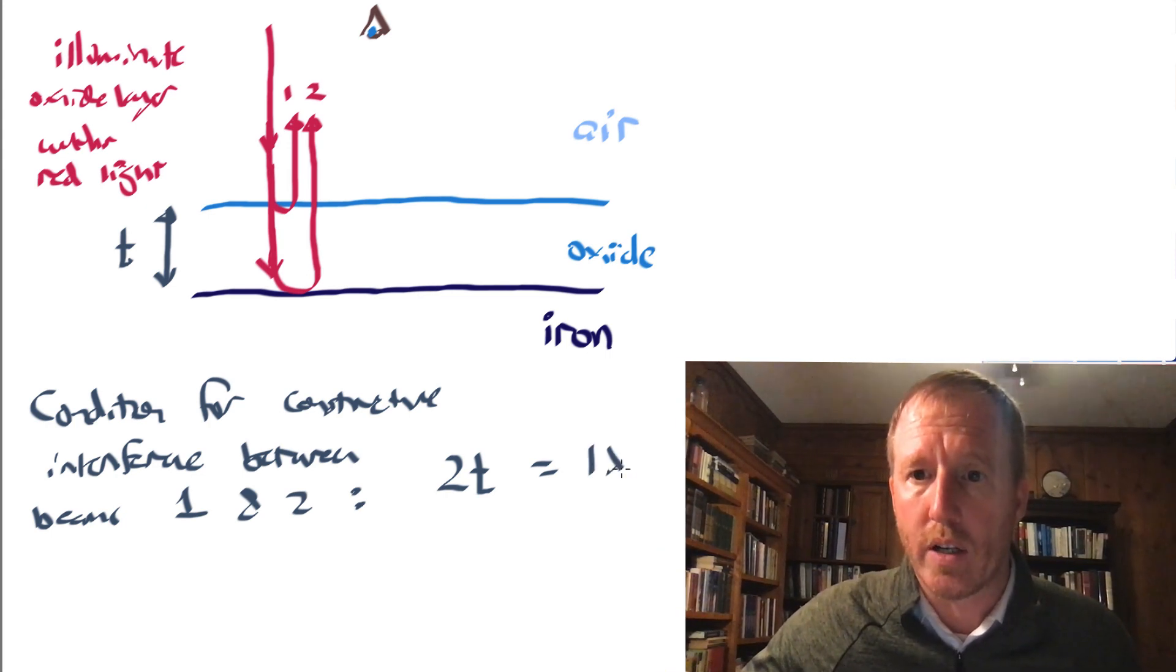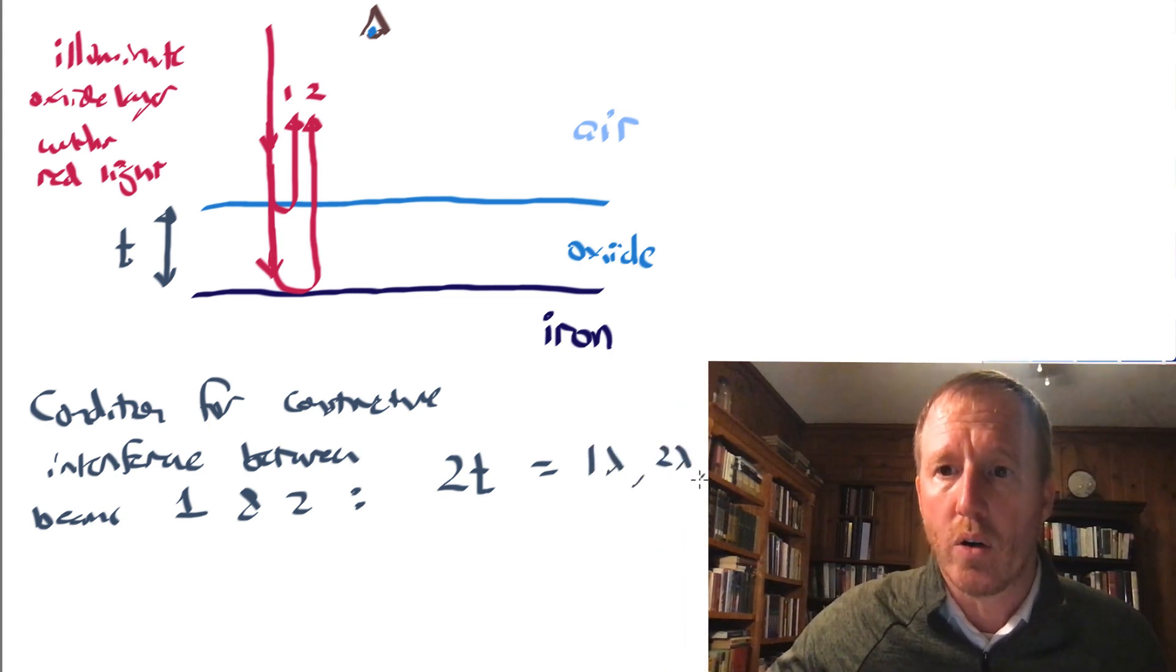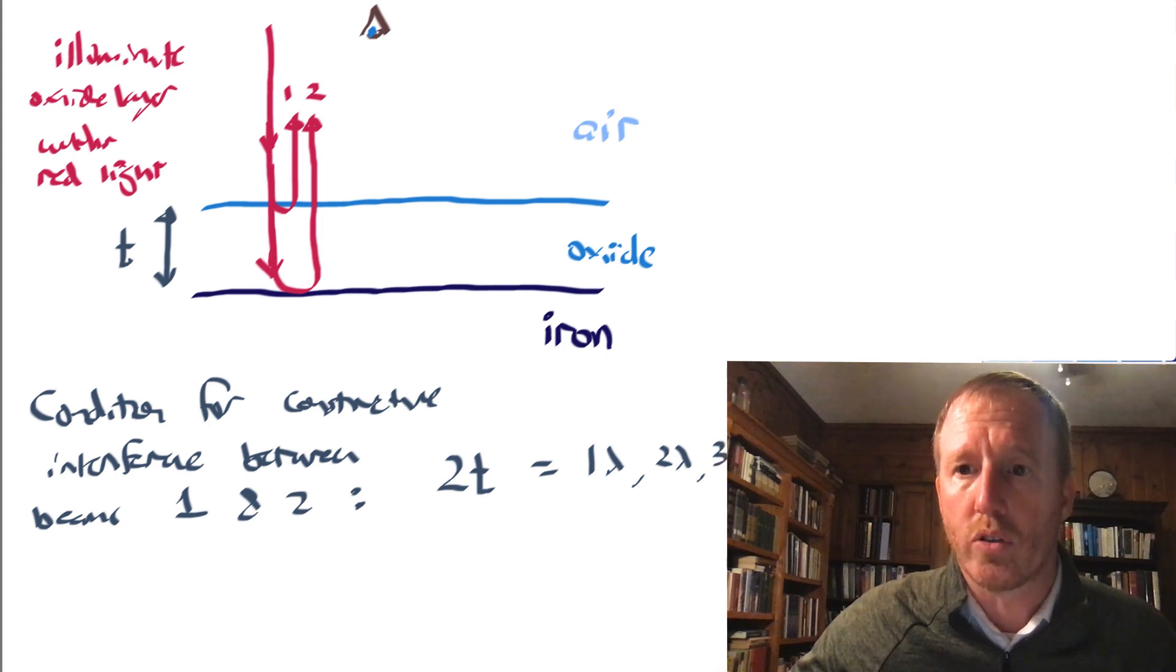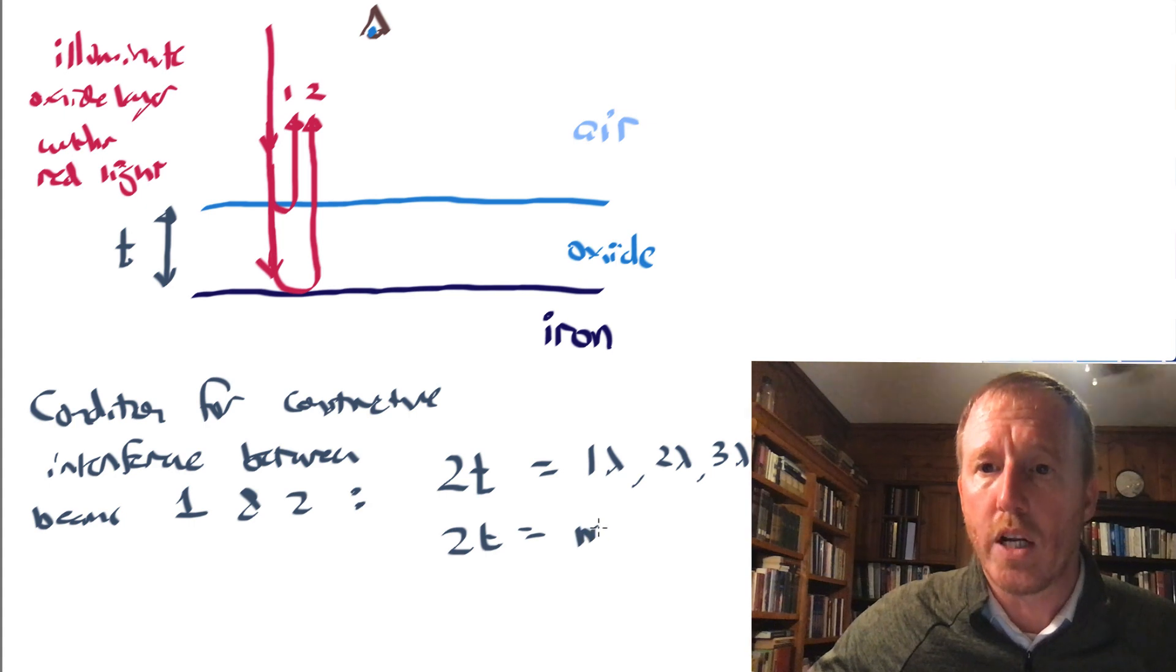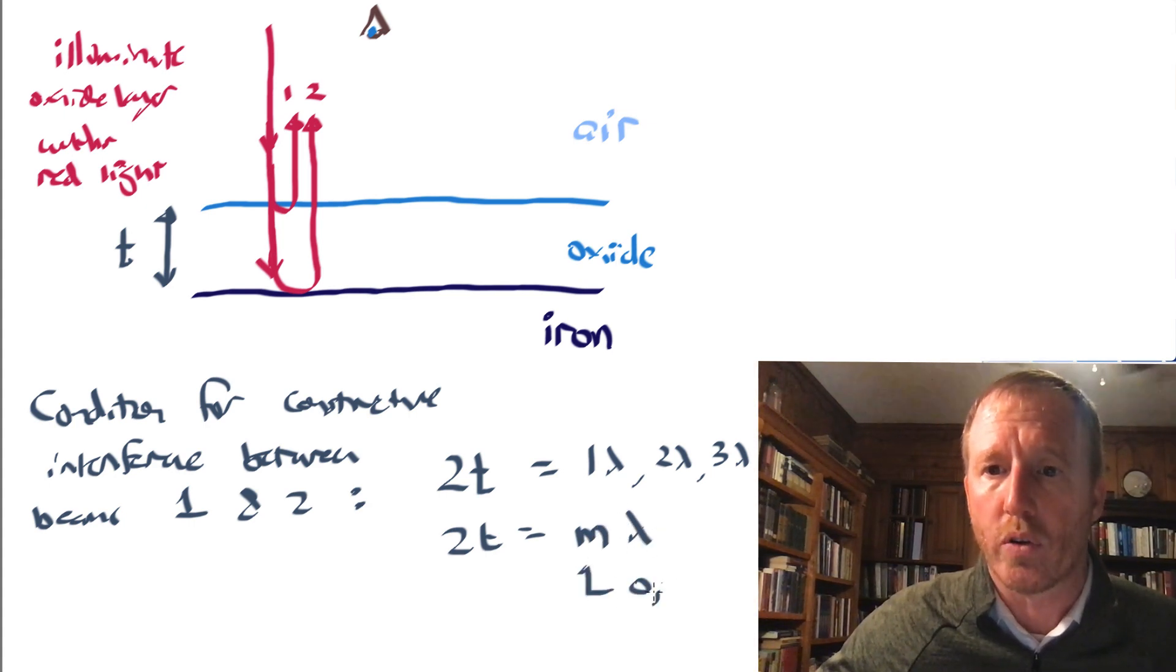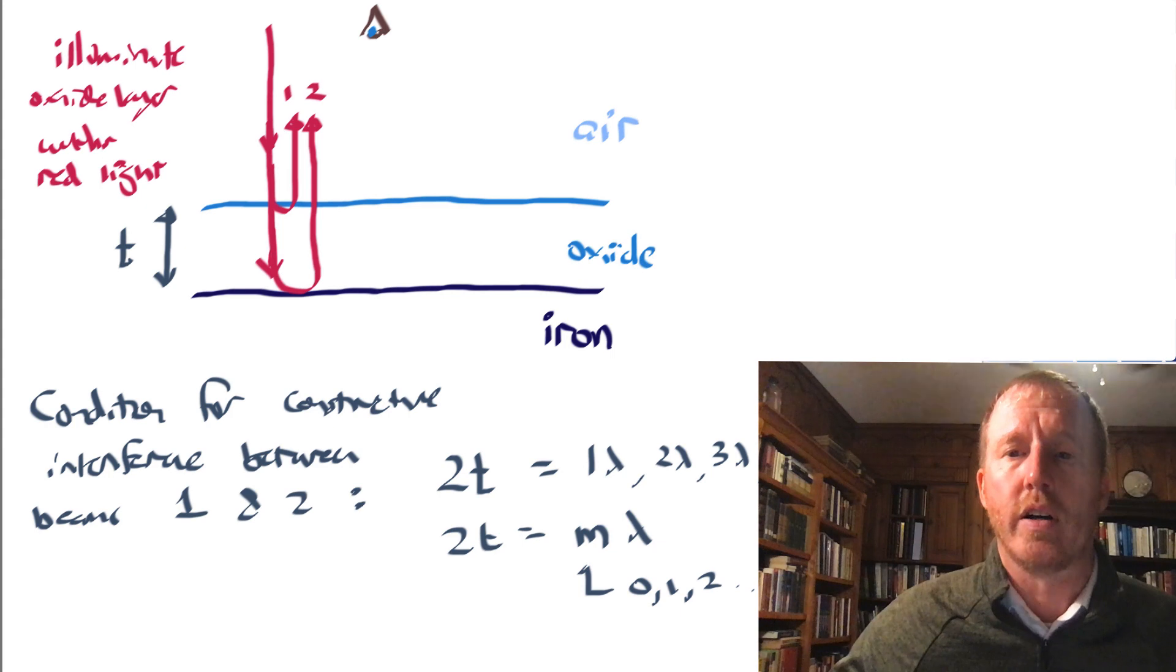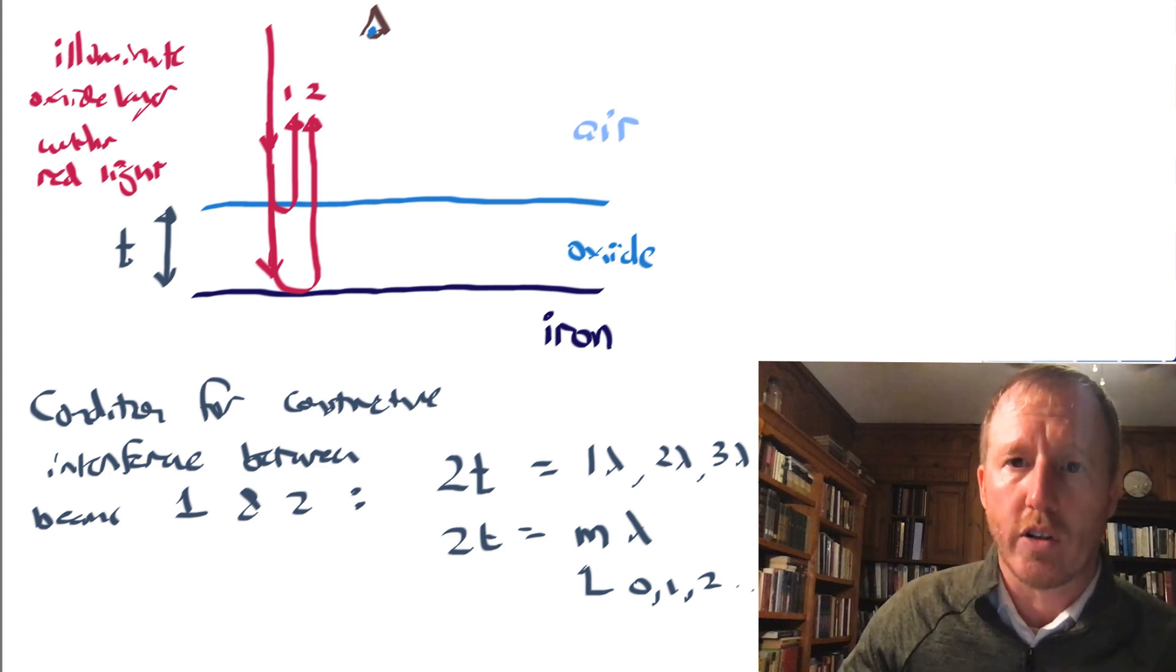So either one lambda or two lambda or three lambda or so on. And more generally, if 2T is equal to some integral number of wavelengths, so M would be equal to zero, one, two, etc., then you would have constructive interference.